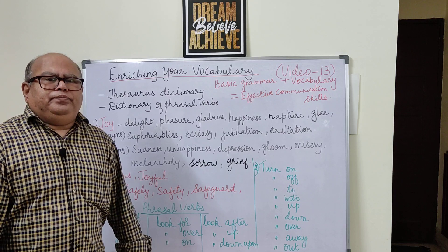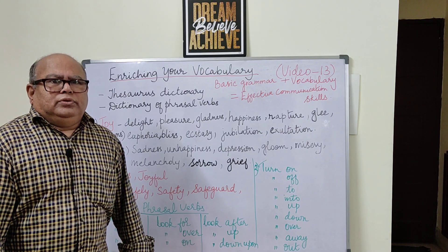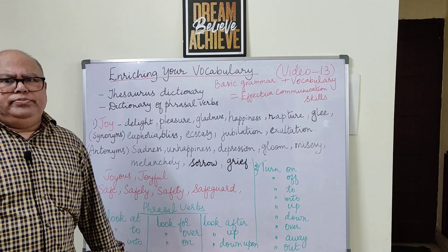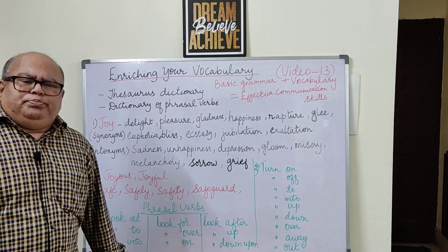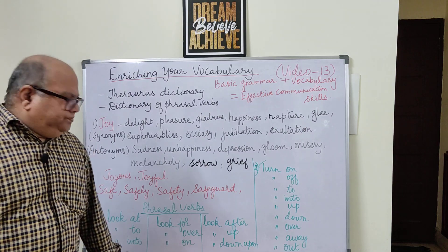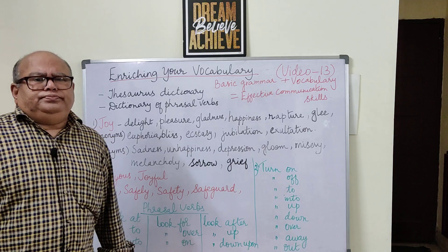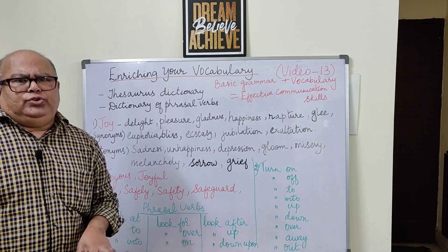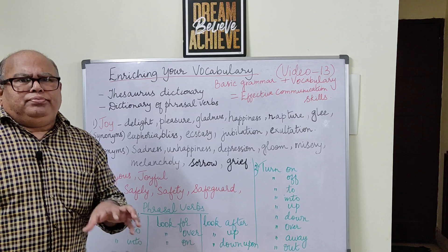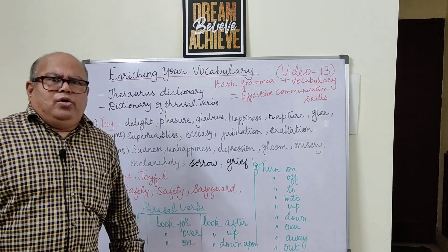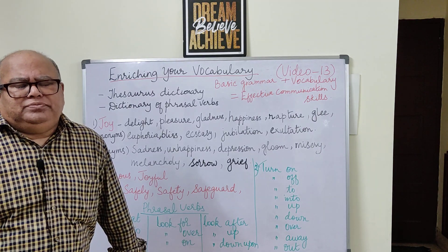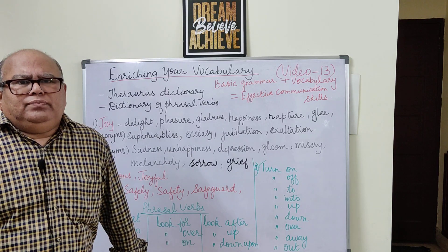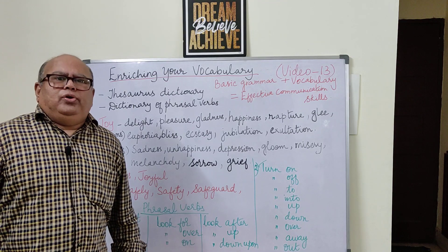'Look after' — the government should do something to look after the poor people, the victims of the flood. 'Look up' — if I do not know the meaning of a word, I look it up in the dictionary. 'Look down upon' — having contempt — the rich tend to look down upon the poor people.